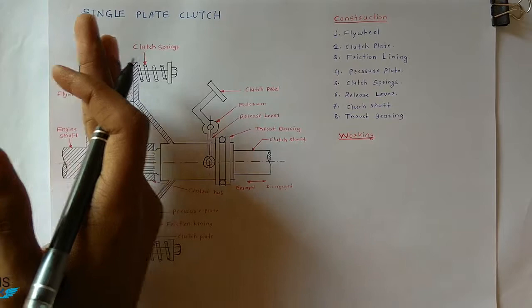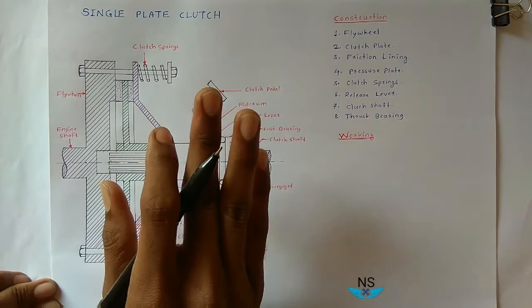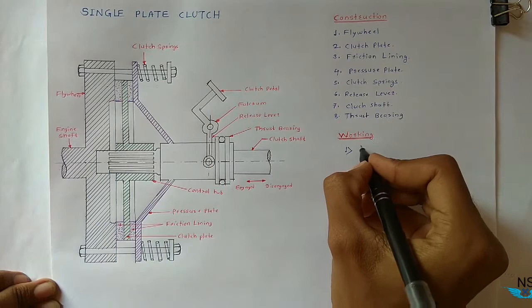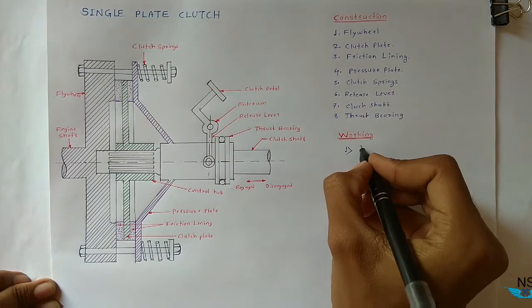When the clutch pedal is released, the clutch gets engaged again and the vehicle starts running. So the working of the single plate clutch can be described in two parts: first, engagement — where power is transmitted from the engine shaft to the gearbox; and second, disengagement — when the driver presses the clutch pedal, the release lever pulls the pressure plate, and the clutch plate gets disengaged from the flywheel.